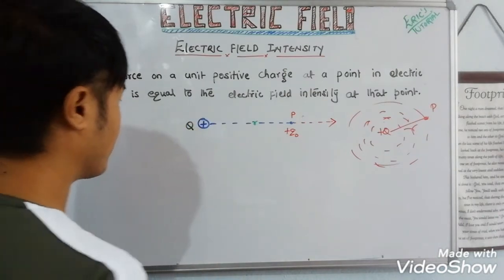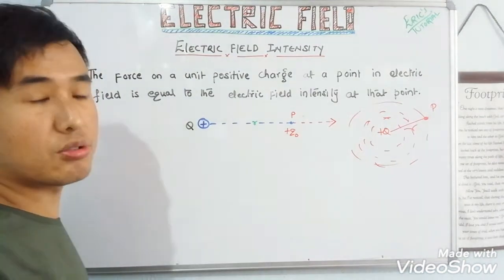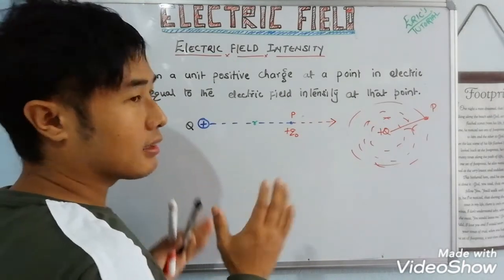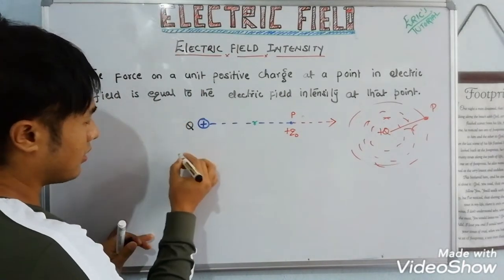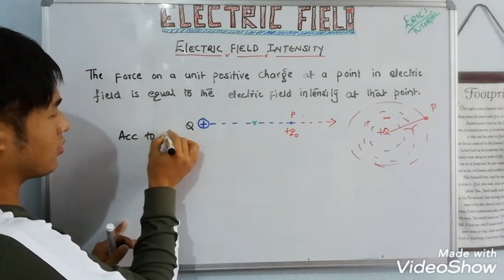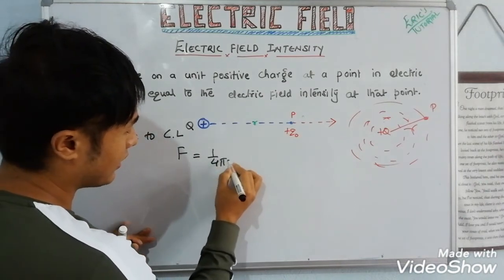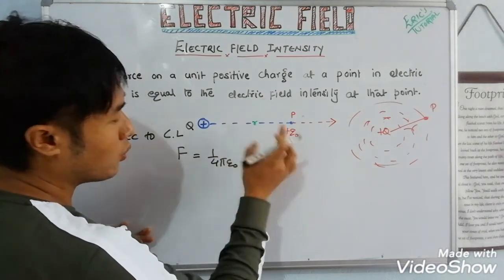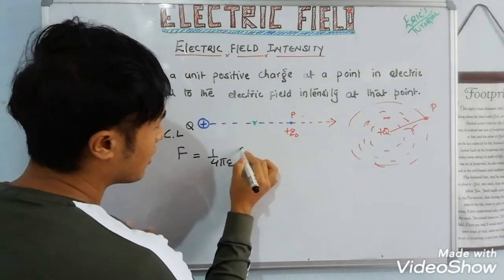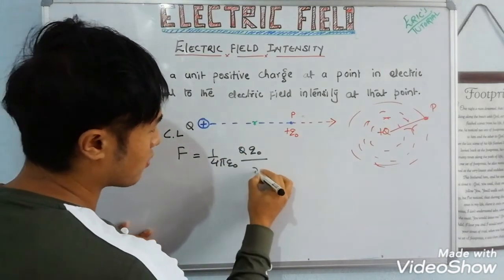According to Coulomb's law — which always gives the magnitude of force — the force is given by F = (1 / 4πε₀) × (q₁ q₂) / r². Here q₁ is the source charge and q₂ is the test charge placed at distance r.